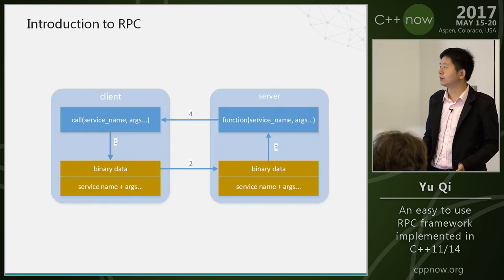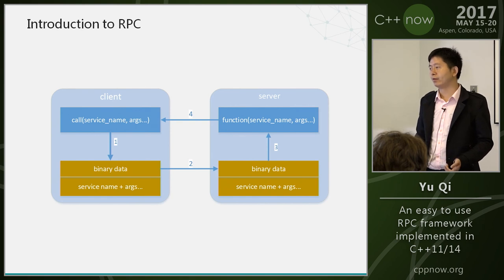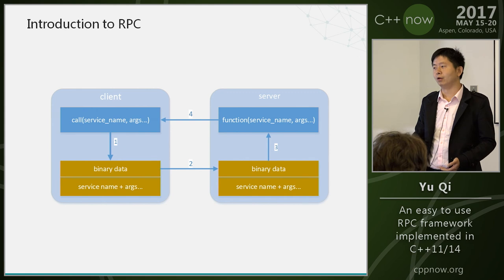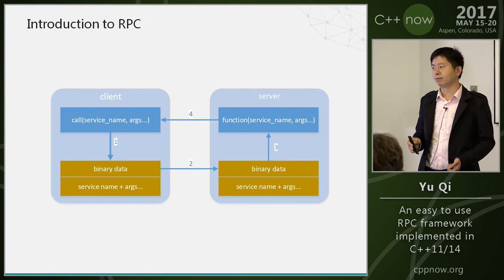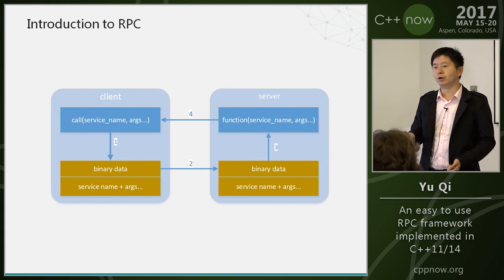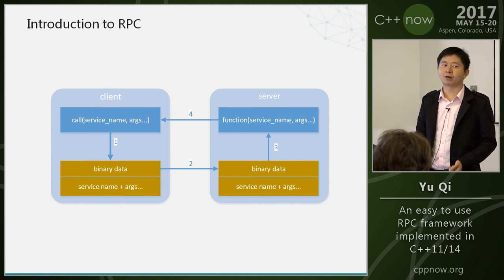This is a typical process of RPC. The client calls a local function, the framework will transform the local function call into binary data. The server will parse the data, route to a real function, and return back the result.